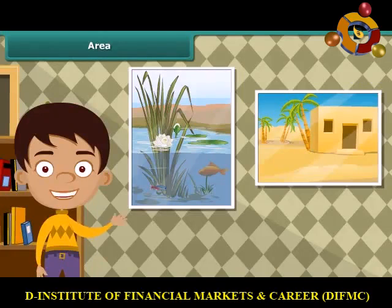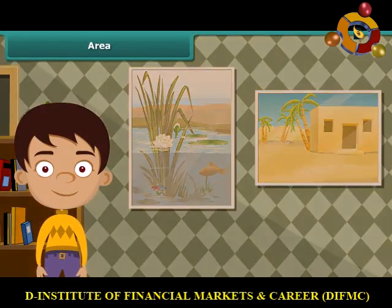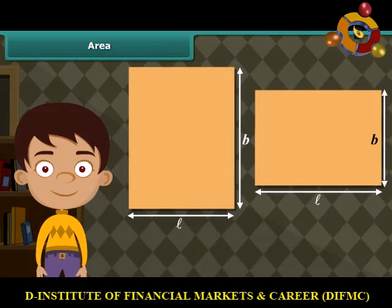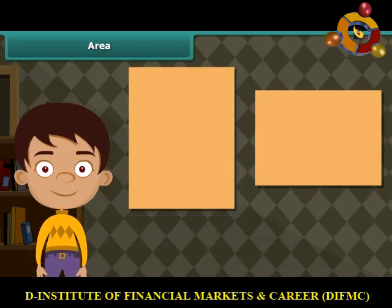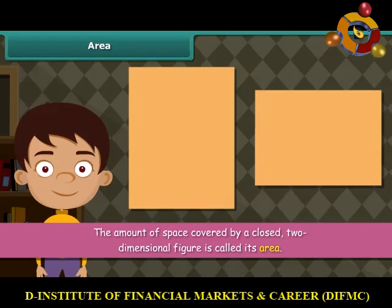Take two paintings of different sizes and compare them. The amount of space covered by the two paintings will be different, because the lengths and breadths of the two paintings are different. The amount of space covered by a closed, two-dimensional figure is called its area.